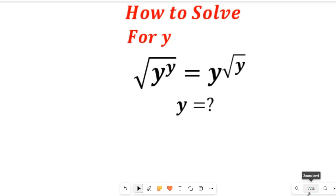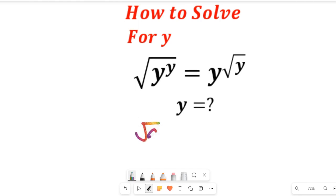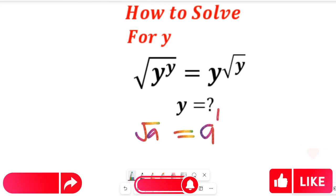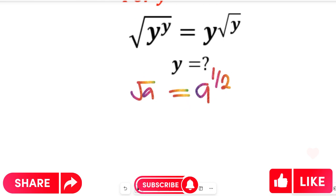To solve this question, all you simply need to do is recognize that you can use the laws of indices. This has to do with the square root laws of indices. You have to recall that from the law of indices, whenever you have the square root of a, it can be equal to a to the power of 1 divided by 2. That is simply what the law of indices gives us, and we are going to apply that in solving this question.